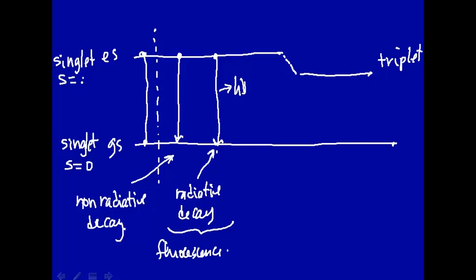Singlet, S equals zero. But a triplet, S is equal to one. So delta S for this process is not allowed, but it happens anyway. It's a forbidden transition. Now we have the molecule in the triplet state.